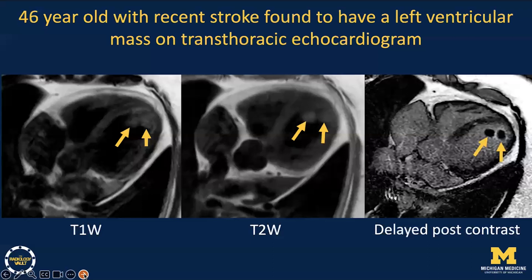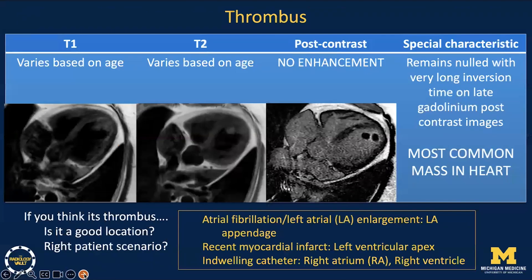This is our first case: a 46-year-old with recent stroke, found to have a left ventricular mass on echo. The diagnosis is thrombus. Thrombus can have variable signal on T1 and T2-weighted sequences, and the key to diagnosis is that thrombus does not typically enhance. This lack of enhancement can be confirmed on the delayed inversion recovery sequence by repeating an image through a slice of the mass with a very long inversion time on the order of 600 milliseconds. Thrombus is the most common mass identified within the heart, and specific clinical scenarios can also help the imager provide a confident diagnosis.